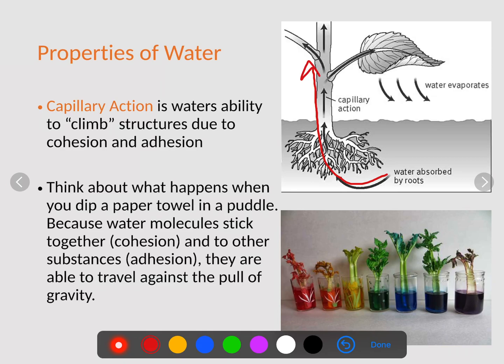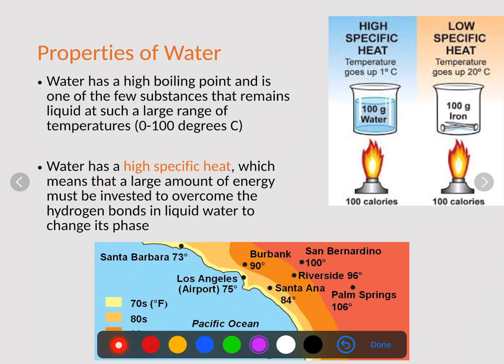Another way to think of it is down here, these are celery stalks. So when we put them in colored water, it actually can pull up the coloring and you can see it changing color. So think about what happens when you dip a paper towel in a puddle as well. Because water molecules stick together, cohesion, and to other substances, adhesion, they're able to travel up and against the pull of gravity, which is a very important characteristic that keeps plants alive.